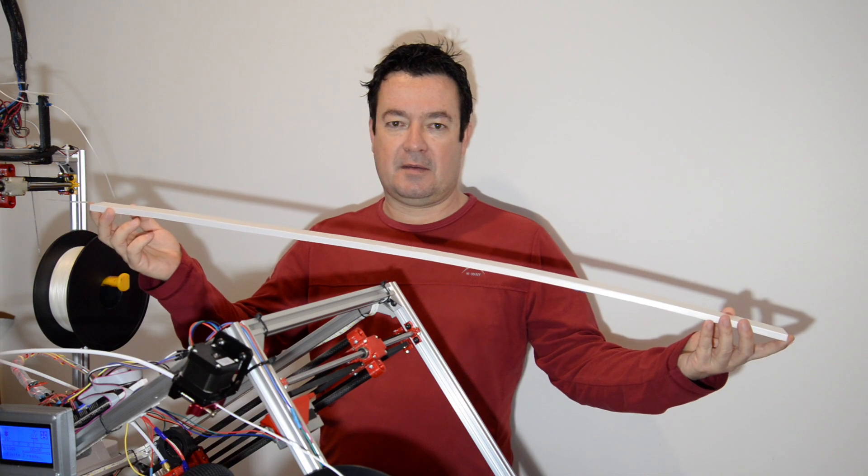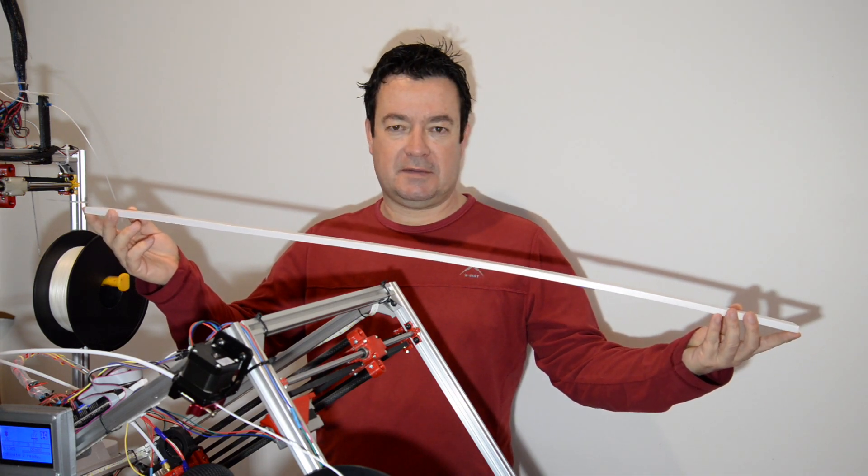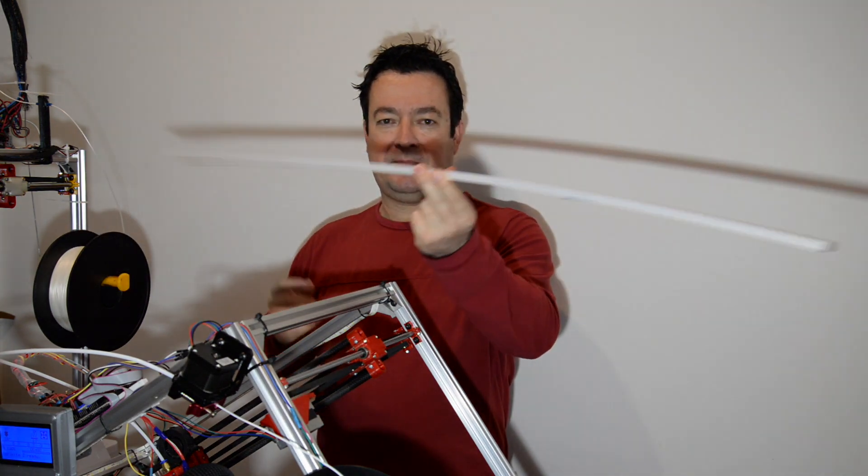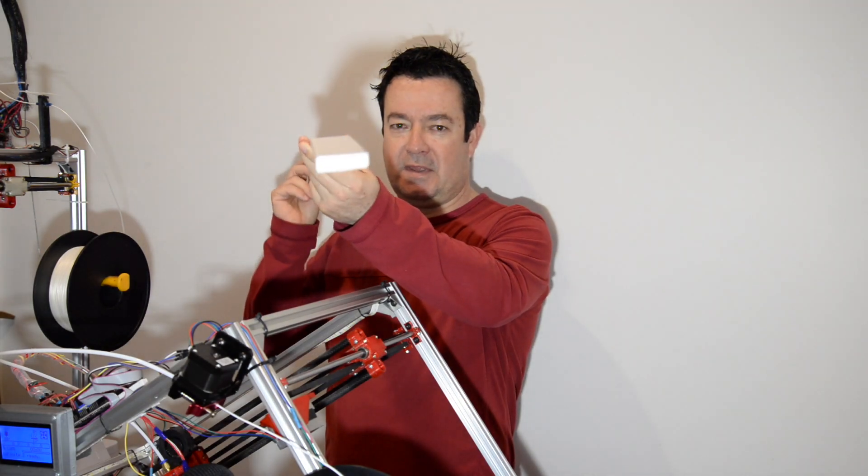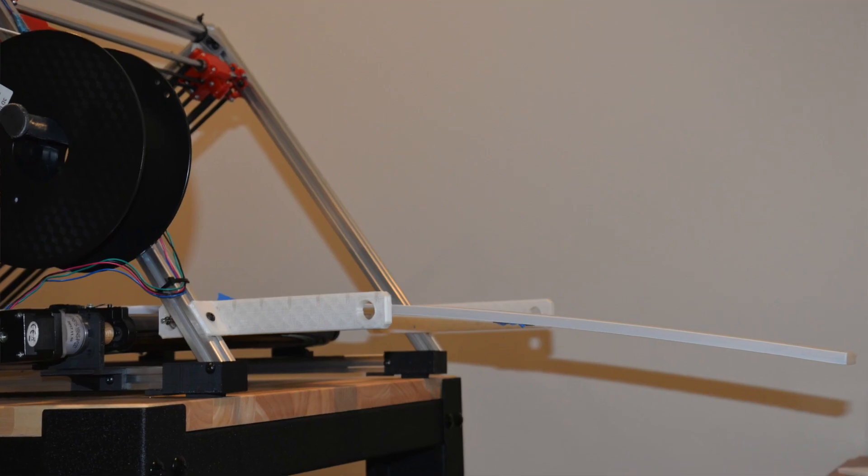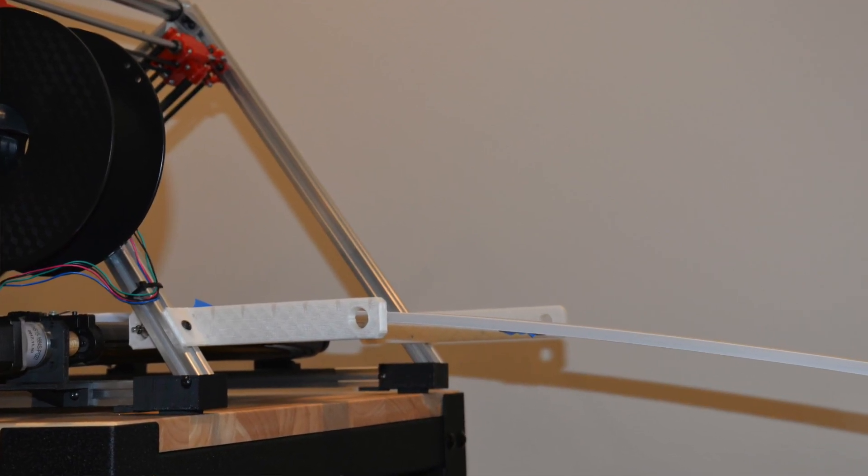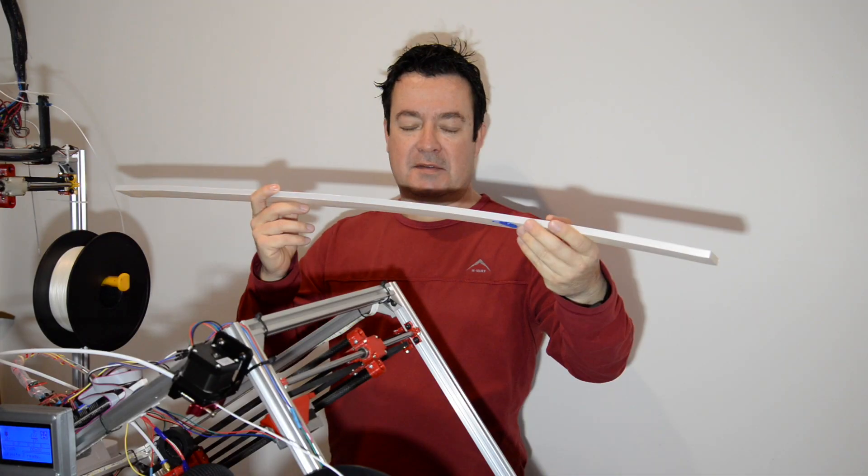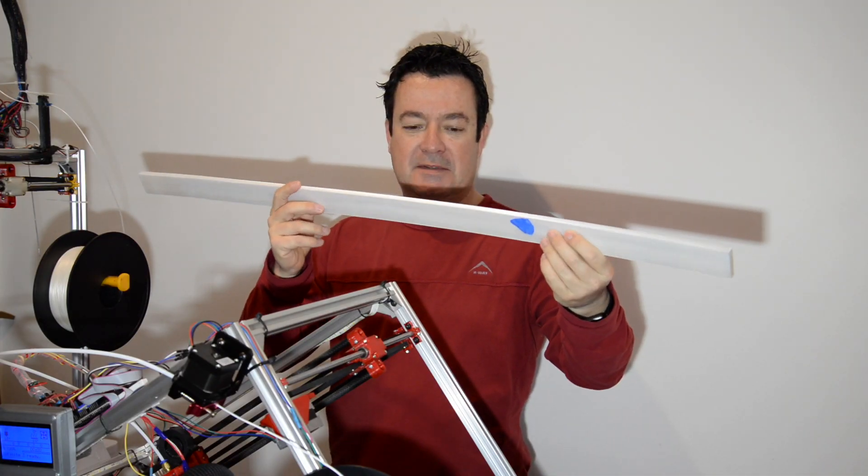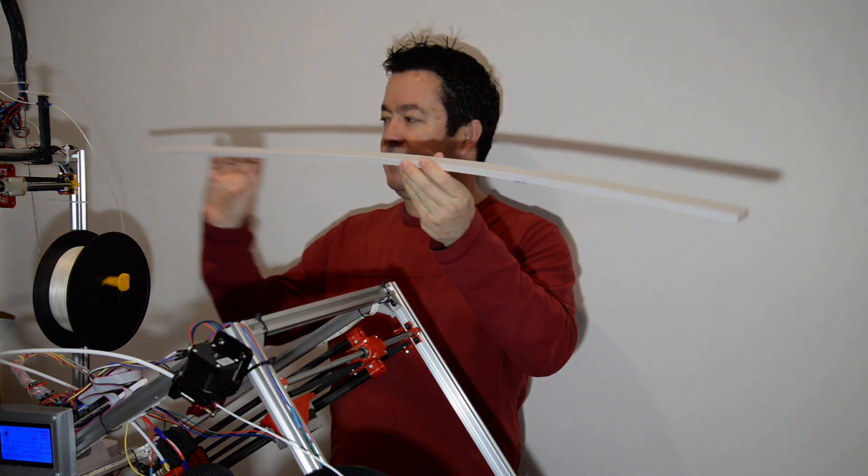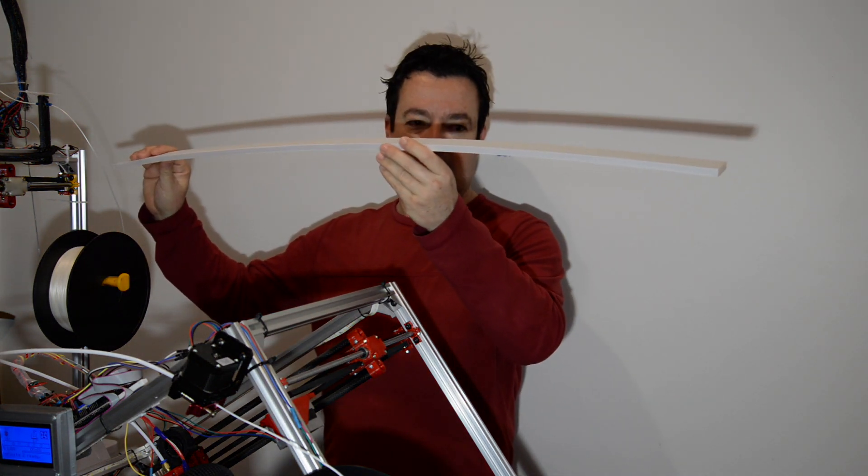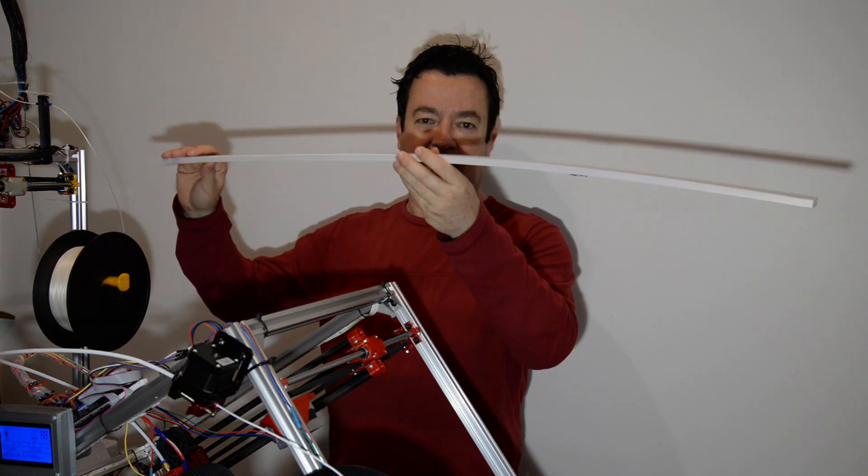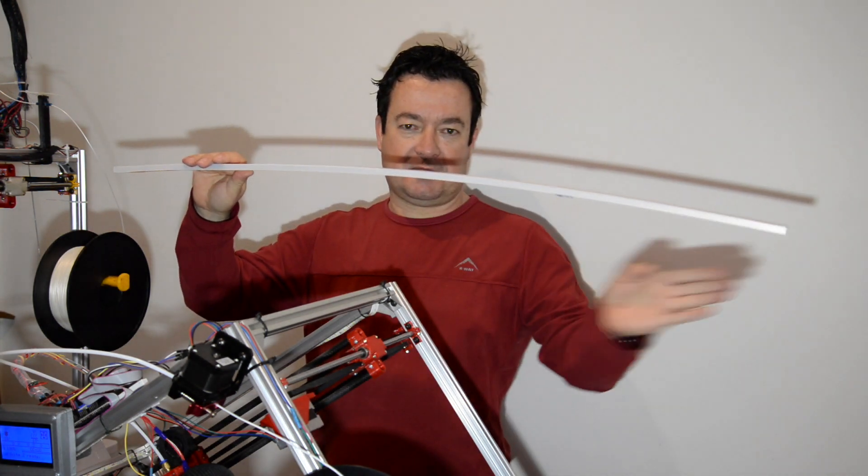So this print took about 8 to 9 hours to print. You can immediately see the problem. It's bent. So as it's rolling off the bed, it sags. This was only printed with a single perimeter, so it's very flexible. But at the same time, while it's printing, it seems to be sagging under its own weight when it rolls off the bed.